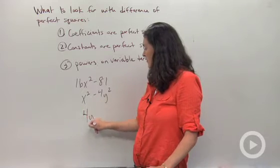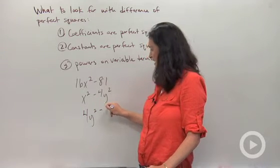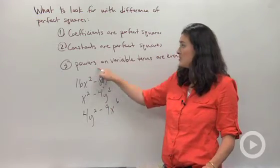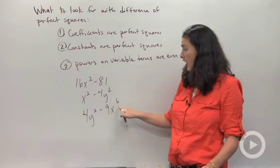Here's one more for you: 4y² - 9x⁶. That's kind of weird because we have x to the sixth, but it's okay as long as the powers are even.